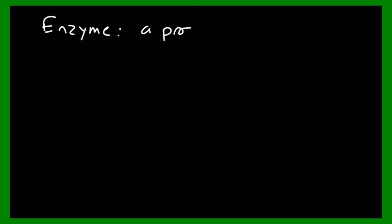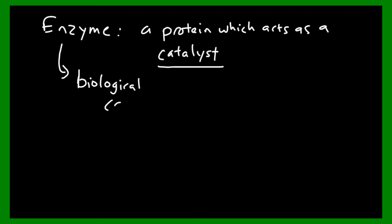An enzyme is a protein which acts as a catalyst. If you don't know what a catalyst is, you need to watch chemical reactions part two because a catalyst is described in detail in that video. Enzymes are biological catalysts.